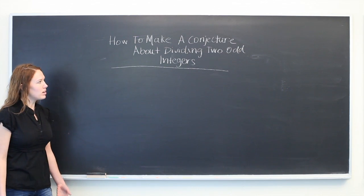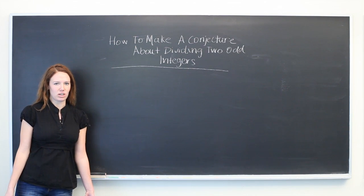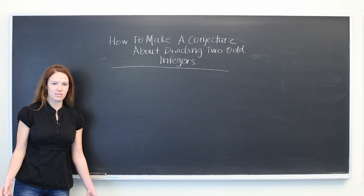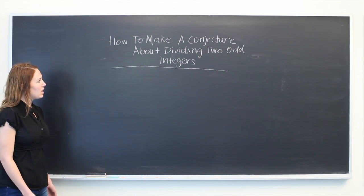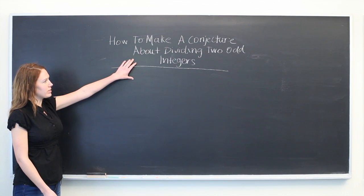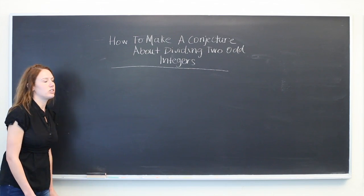So a way to start forming a conjecture is to look at different scenarios. So let's take a couple of examples of dividing two odd integers.